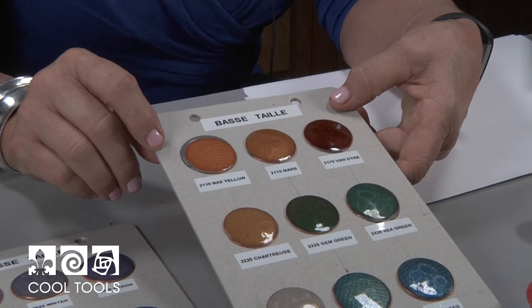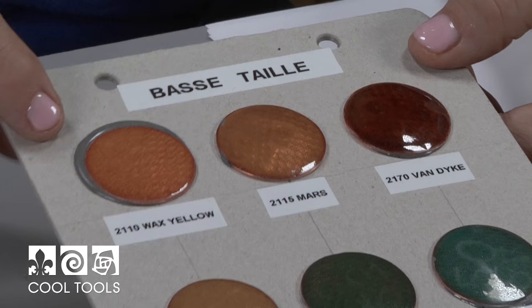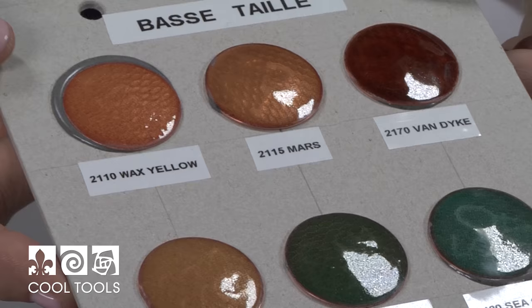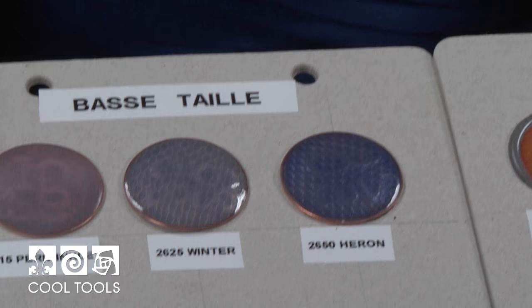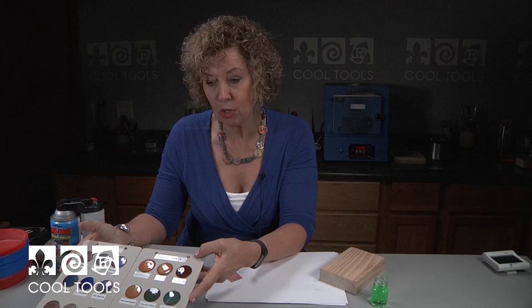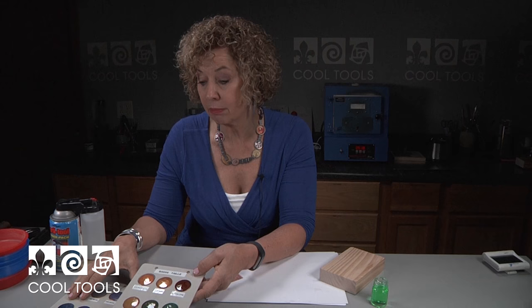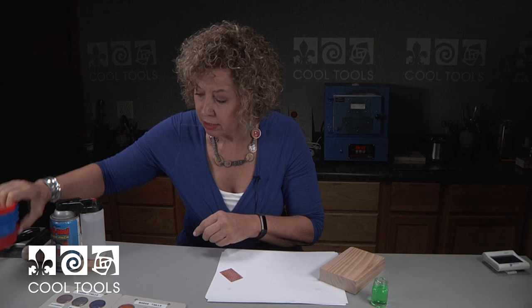So a basse-taille technique is a roller printed, braided, etched surface that is underneath enamel. Most people think of it as being a Fabergé egg. So it's that really dense little roller pattern underneath here and you need really clean enamels for them to show up. So Thompson has come up with a line of unleaded that look beautiful direct on copper. We're going to be playing with these colors today on the top of this roller printed piece. But in order to do that we have to get the dirt out of it.